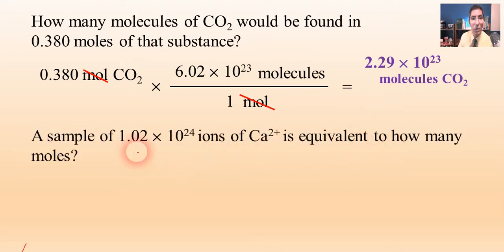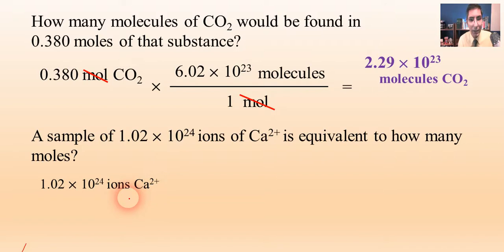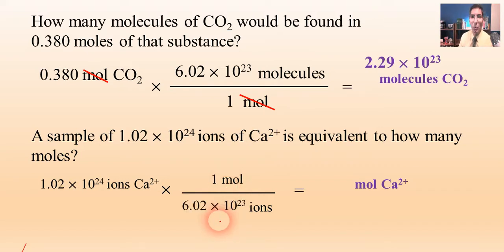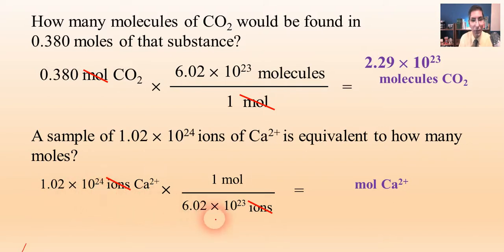We can also go the other way. If we have a sample of 1.02 times 10 to the 24th ions of calcium (Ca²⁺), how many moles is that? Starting with 1.02 times 10 to the 24th ions, we put ions on the bottom and moles on top. There are 6.02 times 10 to the 23rd ions in one mole, so ions cancel. Dividing 1.02E24 by 6.02E23 gives an answer of approximately 1.69 moles of calcium.